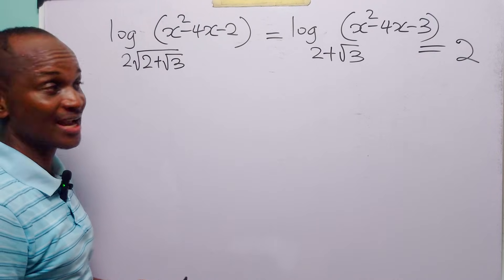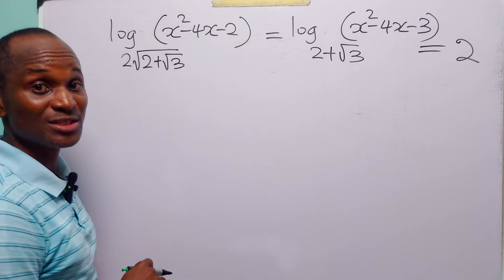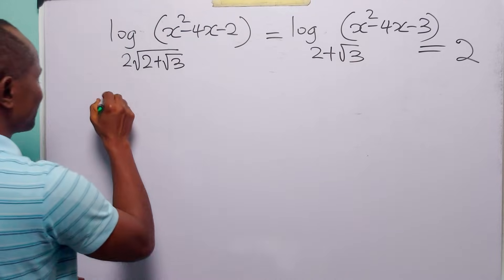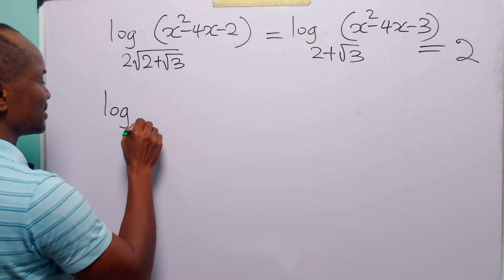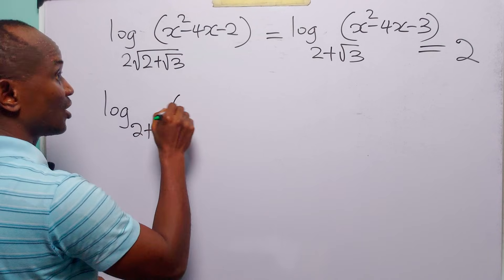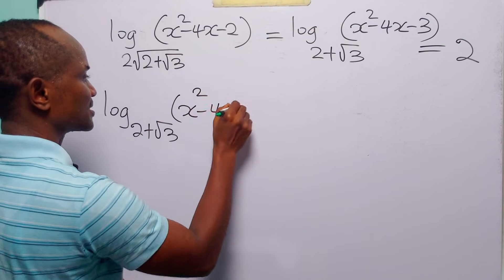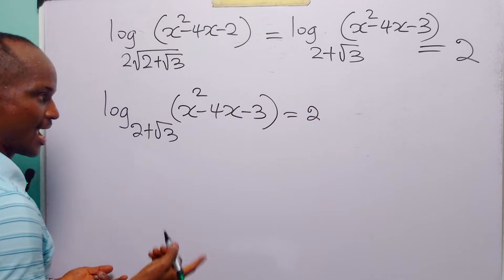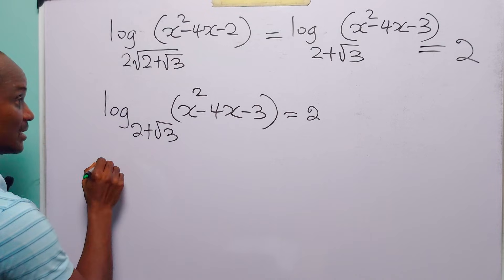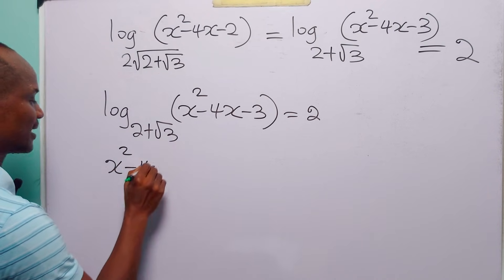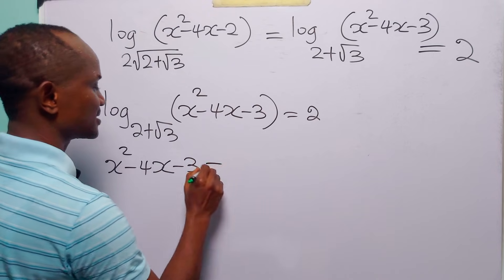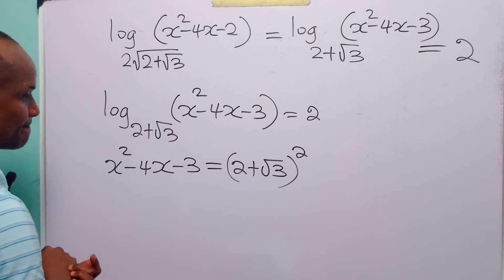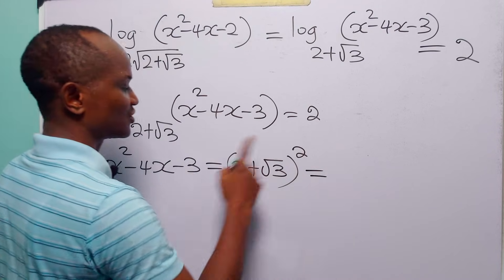To find the value of x, we choose the simpler equation — you do not get extra marks for choosing hard problems. So let us choose the second equation. We have log to base 2 plus root 3 of (x² minus 4x minus 3) equals 2. From this equation we have that x² minus 4x minus 3 is equal to (2 plus root 3) squared.